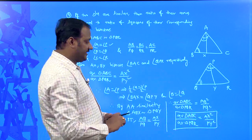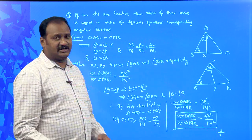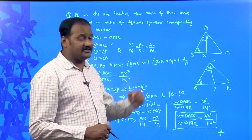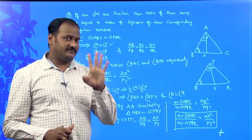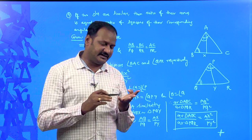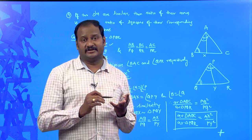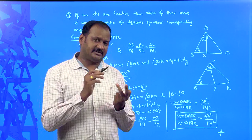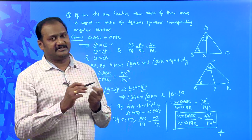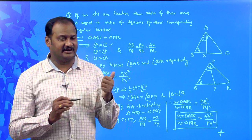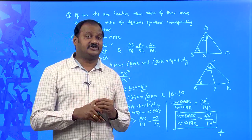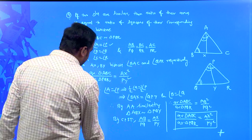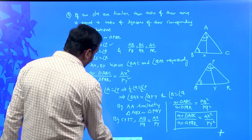This proves that if two triangles are similar, then the ratio of their areas is equal to the ratio of squares of their corresponding angular bisectors. So till now we have proved four things: if two triangles are similar, the ratio of their areas equals the ratio of squares of their corresponding sides, corresponding altitudes, corresponding medians, and corresponding angular bisectors. The final one is that it also equals the ratio of squares of their corresponding perimeters.